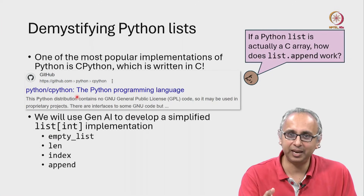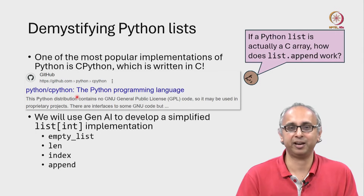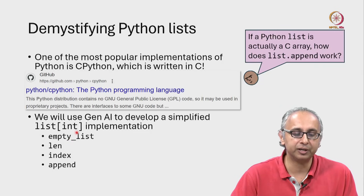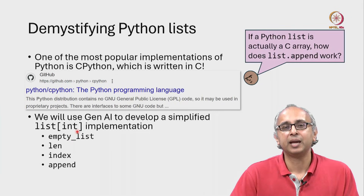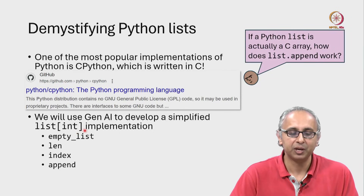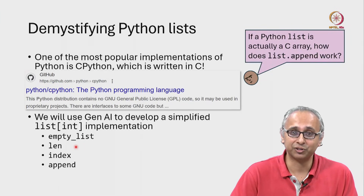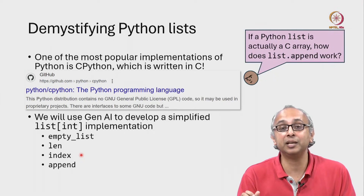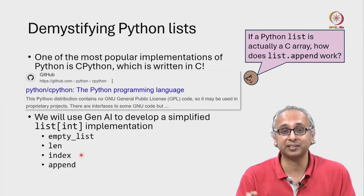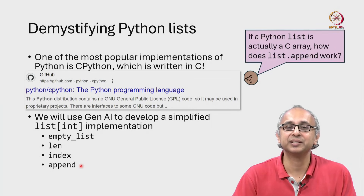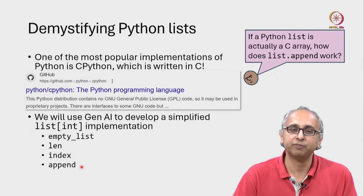We are going to use generative AI to create a simplified version of Python's lists. Python's lists are heterogeneous, but we are going to focus on lists of integers. Python lists have many methods and functions, but we will focus on: creating an empty list, mimicking the len function, mimicking the ability to index into a list including negative indexing (which is not available in C), and lastly the list.append method — although we will write it as a function, not a method.